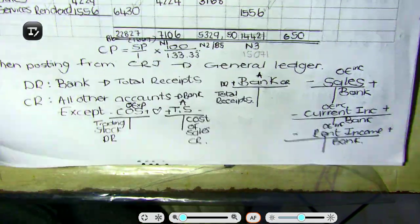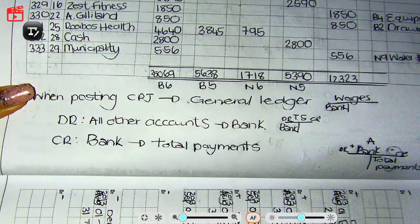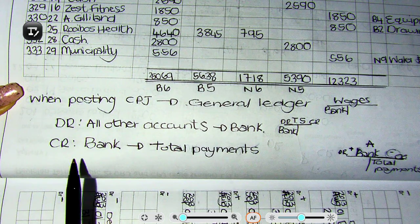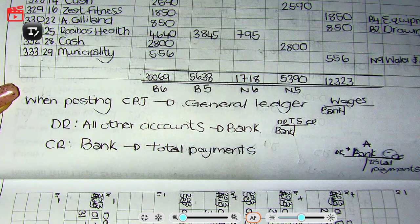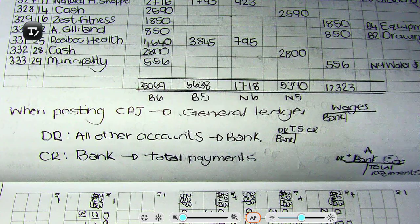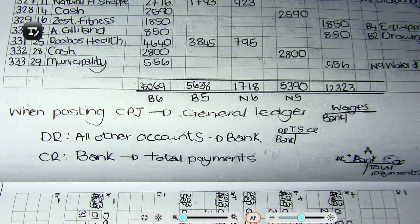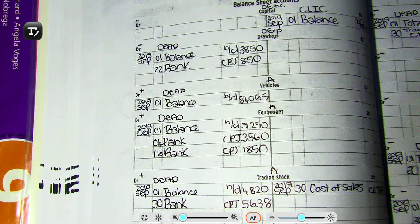For the CPJ, it's a little simpler. When posting from your CPJ to your General Ledger, credit bank with the word 'total payments' and debit all other accounts with the word 'bank'. I'm going to end this video here as it's quite long. The next video will cover totaling and balancing of the accounts, and then I will start the trial balance in that same video.